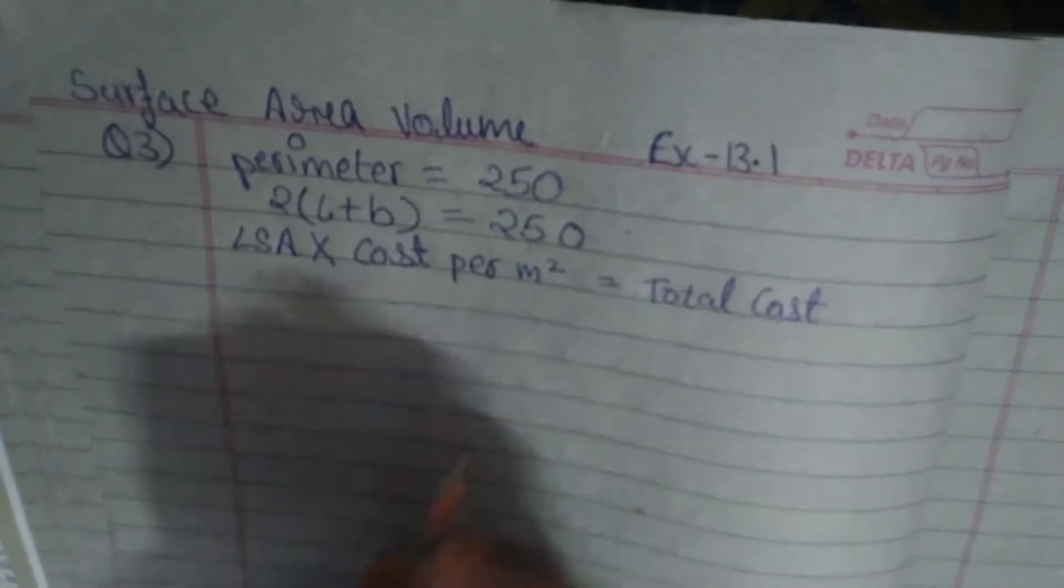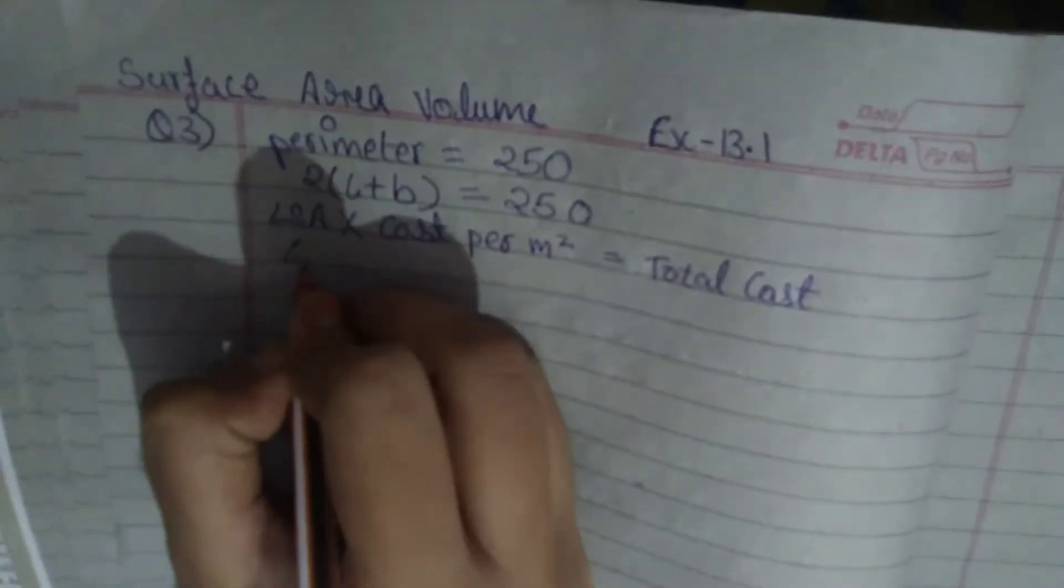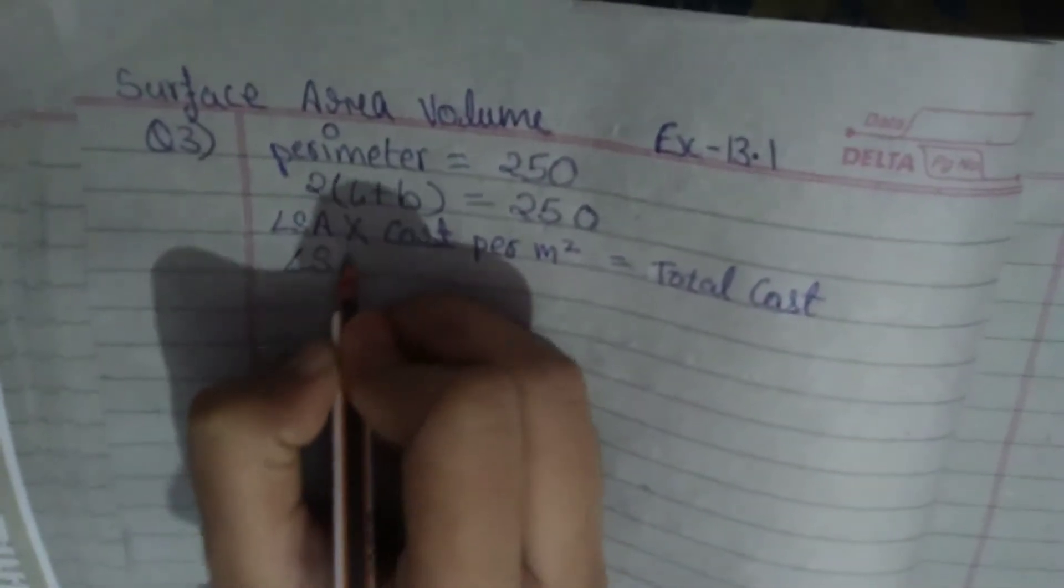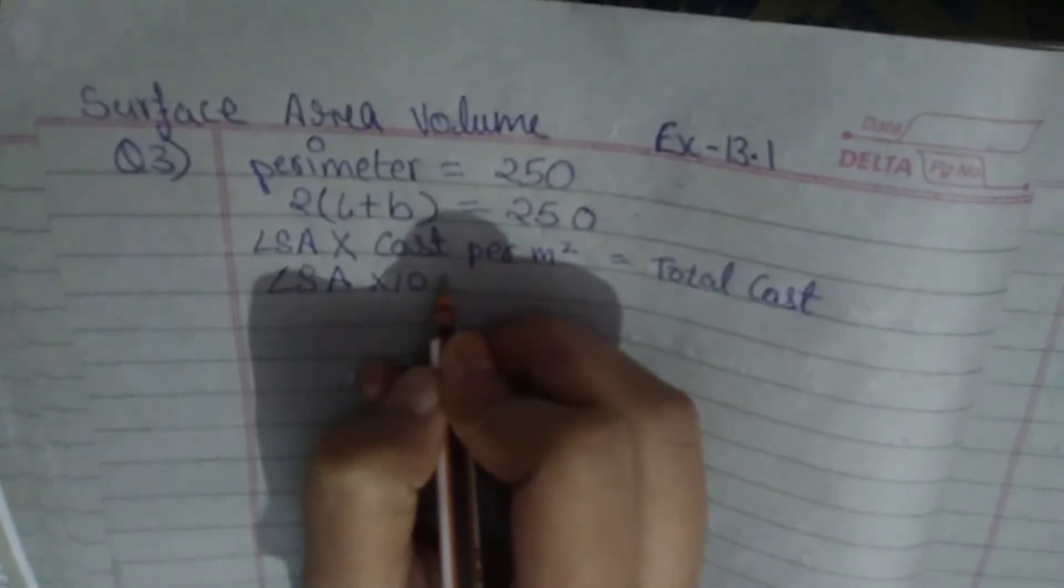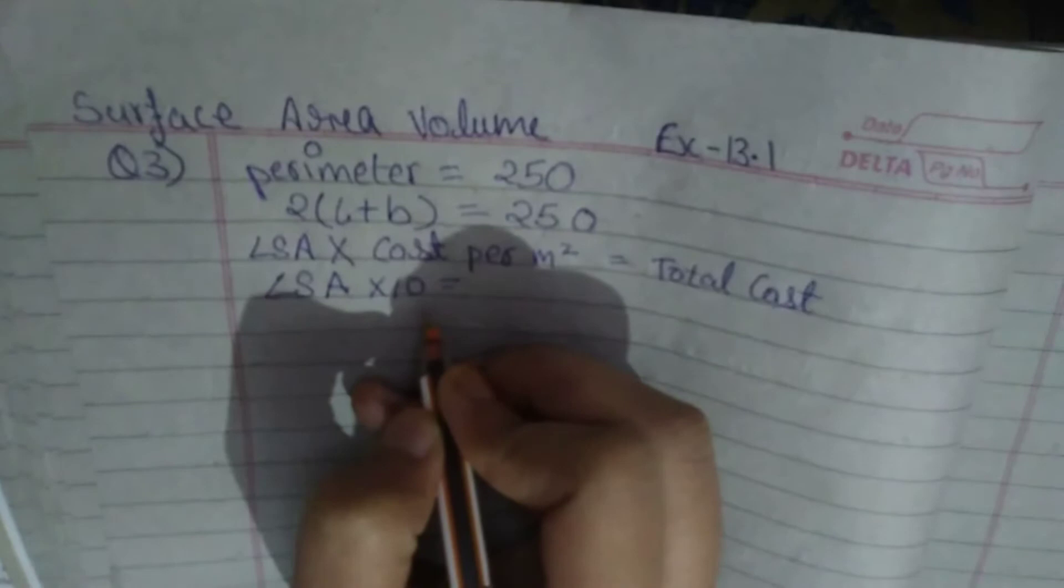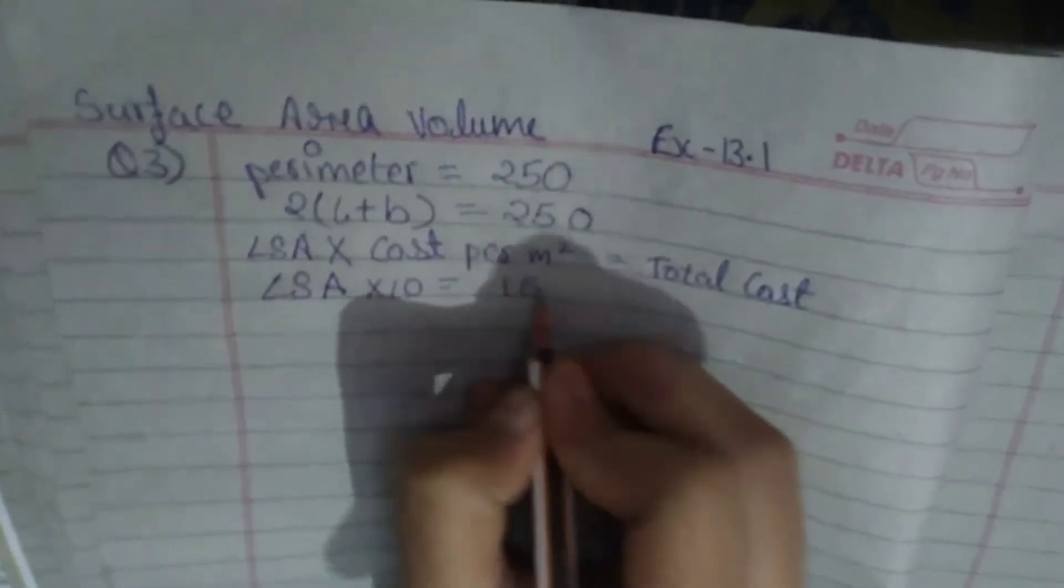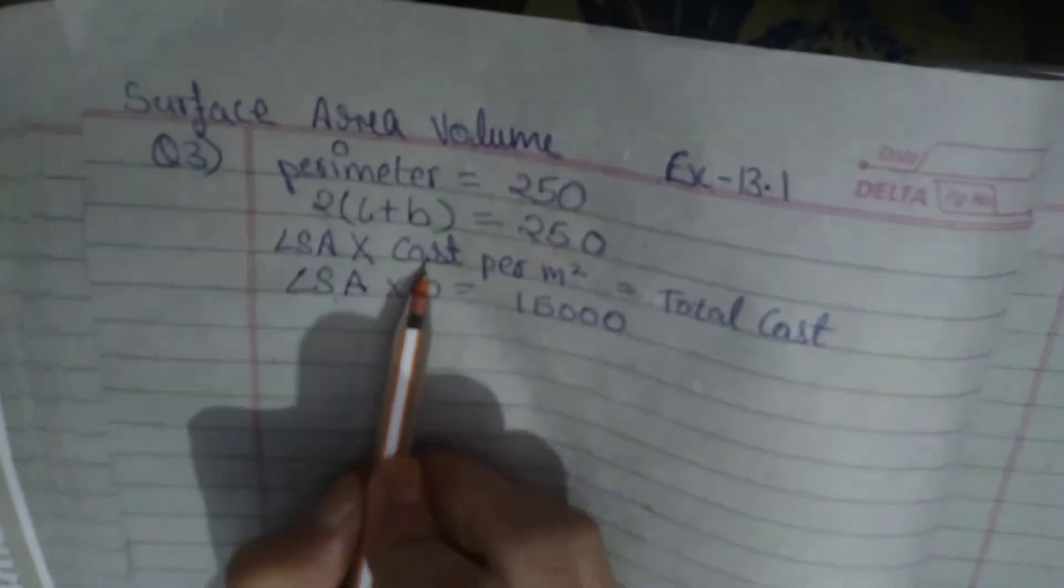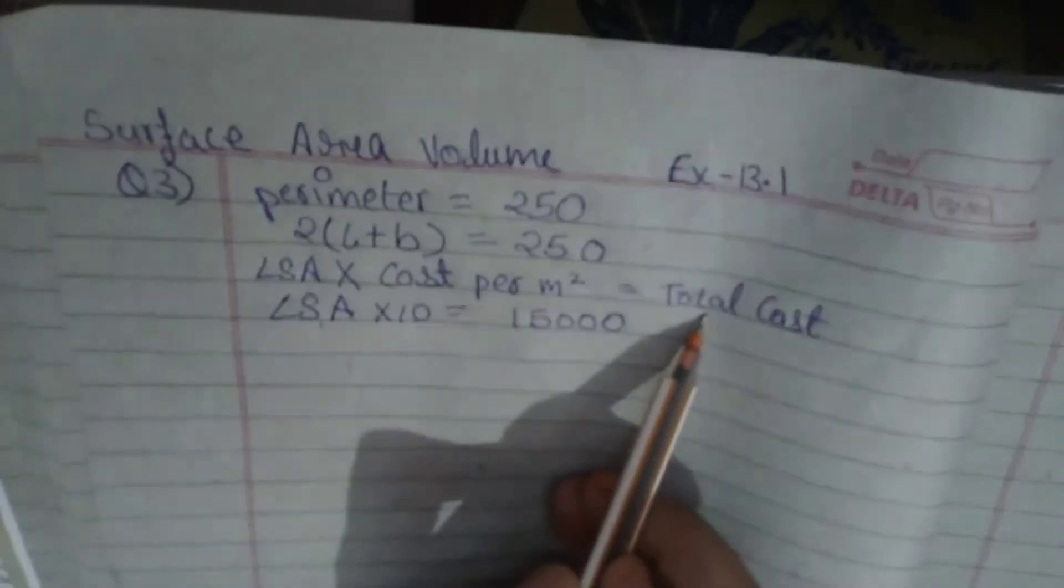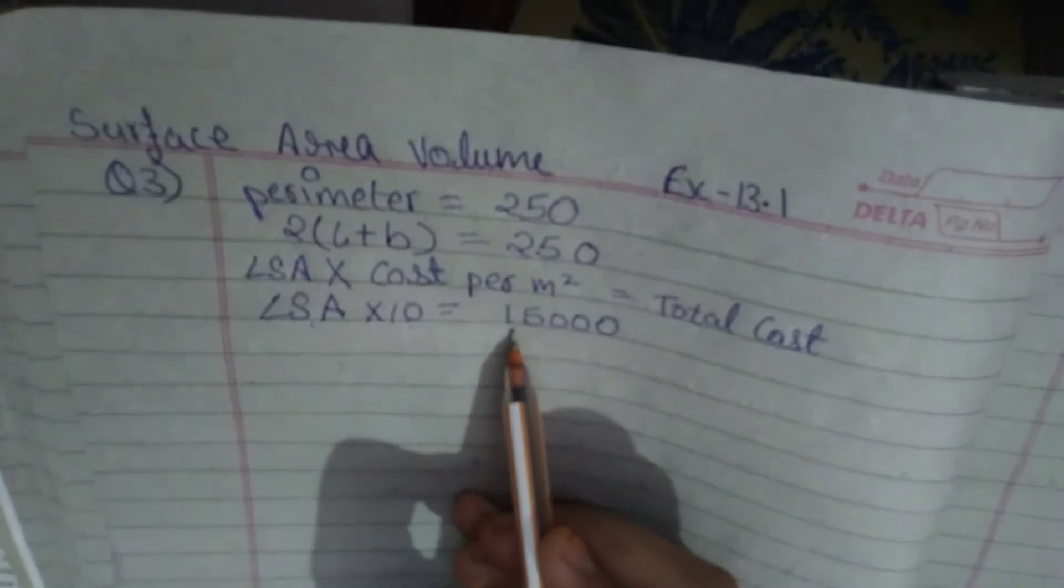We have to find the lateral surface area into 10 which is equal to 15,000. LSA into 10 equals 15,000.